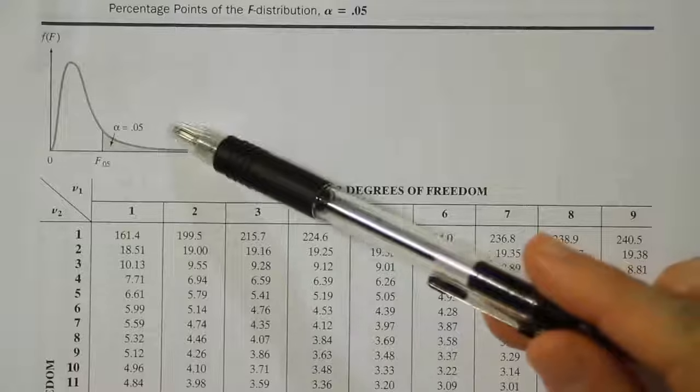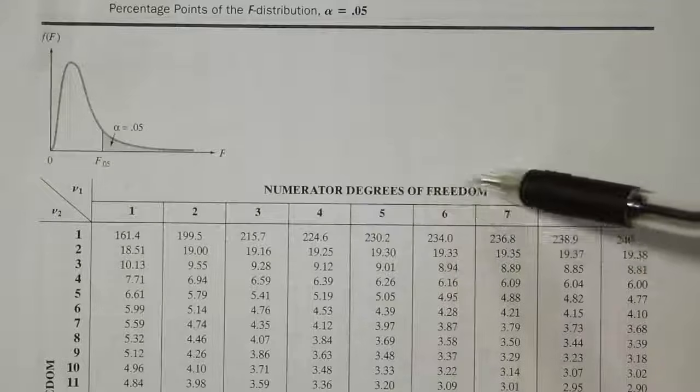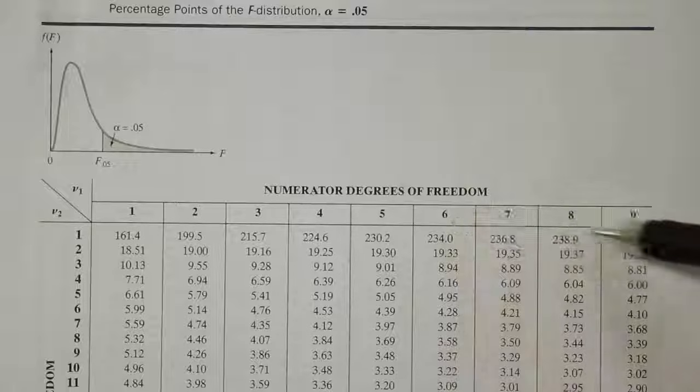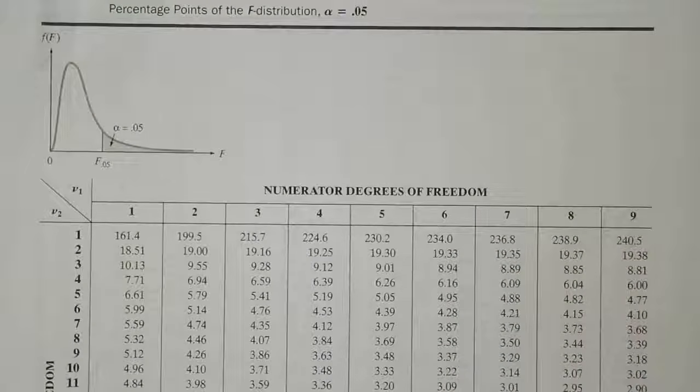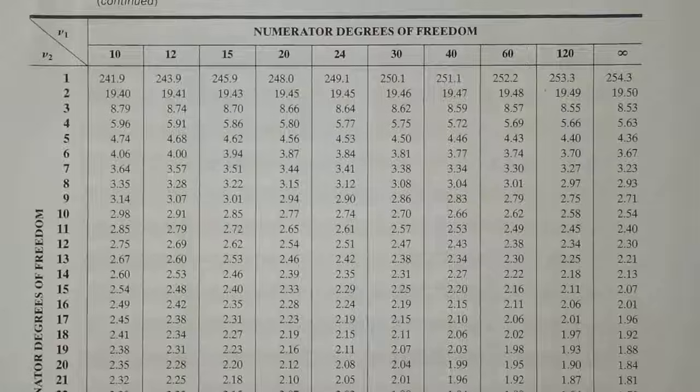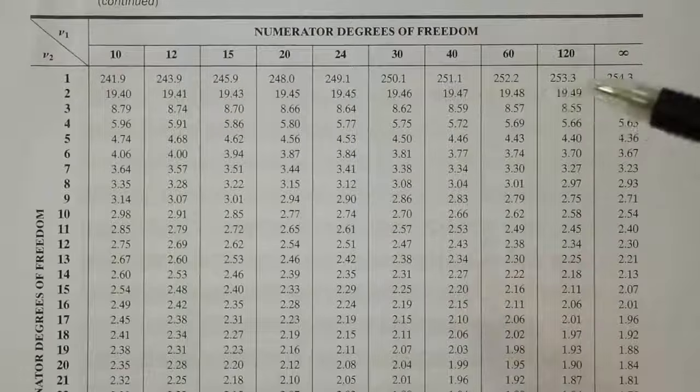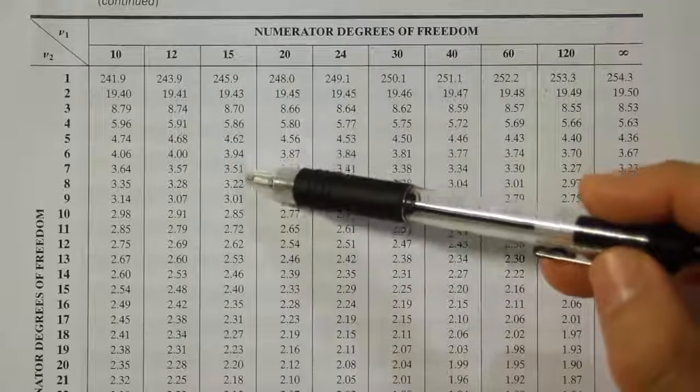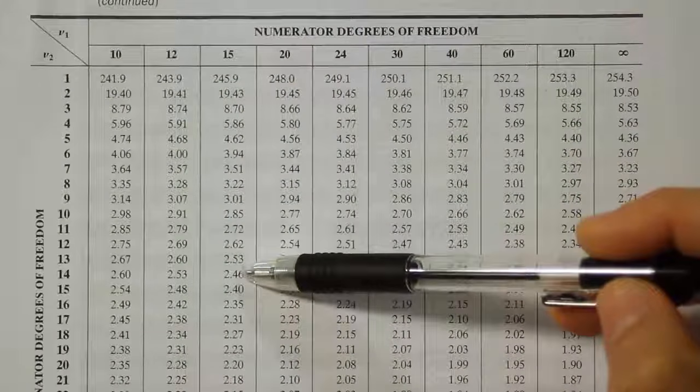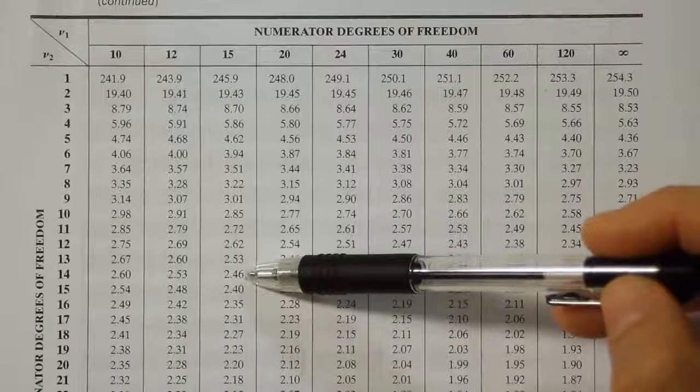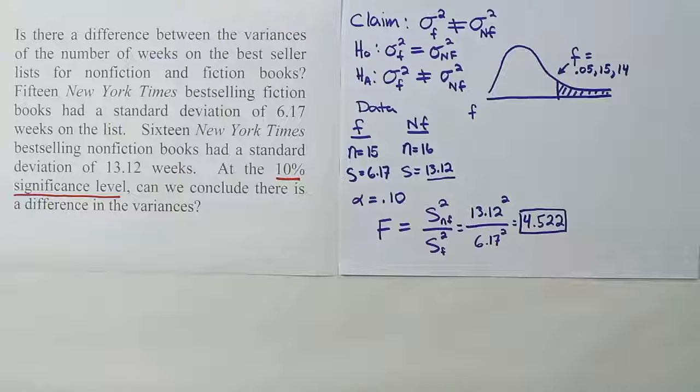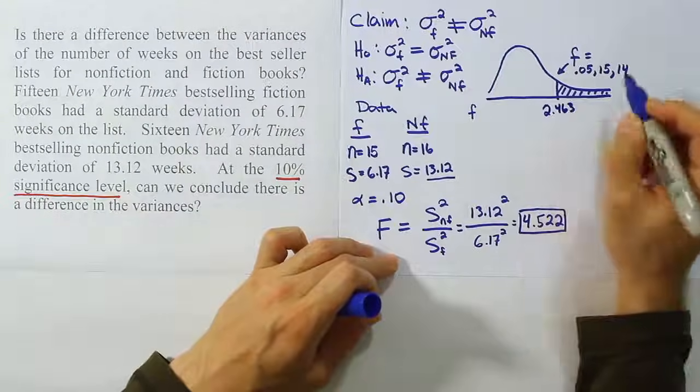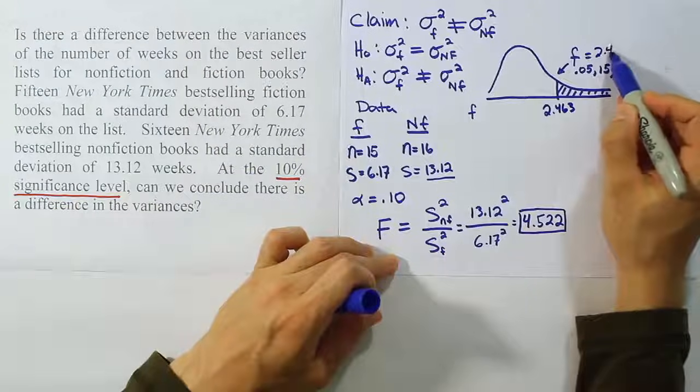So we're on the 0.05 table, and we're looking for numerator degrees of freedom 15, and denominator degrees of freedom 14. We don't have numerator degrees of freedom 15 on this first page of the table, so I'm going to take that off and look at just the second page of the table. Now looking at the second page of the table, we see that we do have 15 at the top, and we're going to go down to 14 here. And when we come down to 14, we find the answer 2.46. Our critical value turned out to be 2.463. So this F value is 2.463.